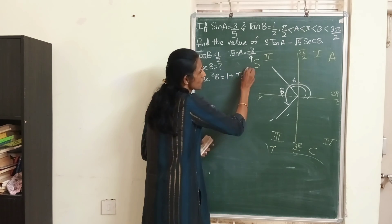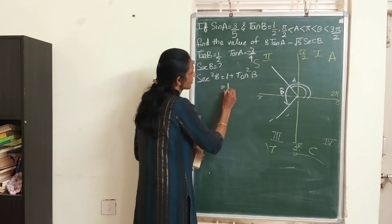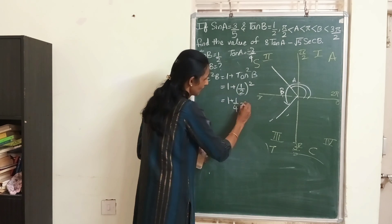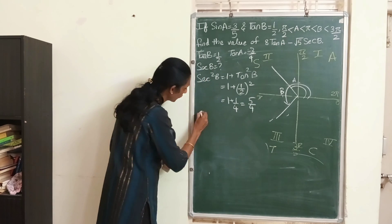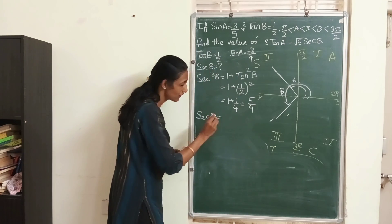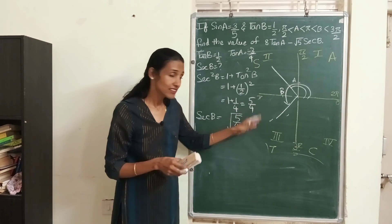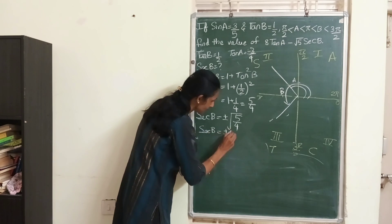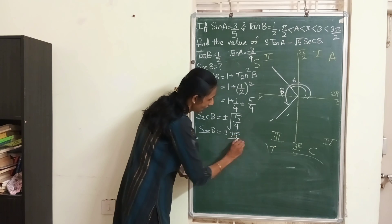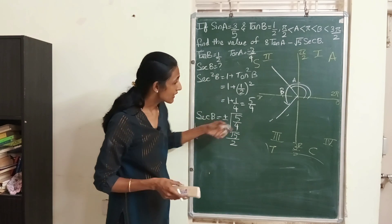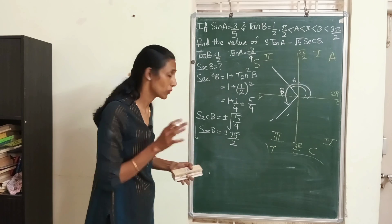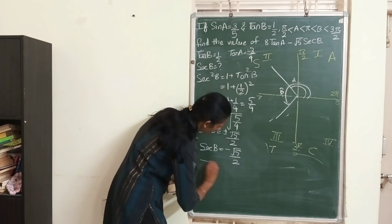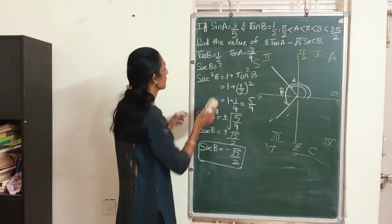Which formula relates tan B with sec B? The identity is sec²B = 1 + tan²B. Substituting: 1 + (1/2)² = 1 + 1/4 = 5/4. So sec²B = 5/4. Therefore sec B = √(5/4), but since the angle is in the third quadrant, it can be plus or minus, giving sec B = ±√5/2.